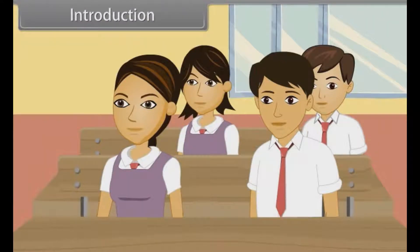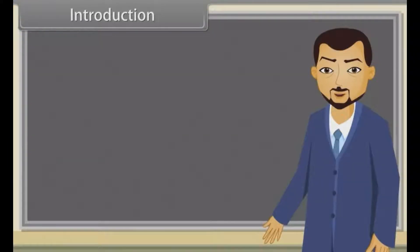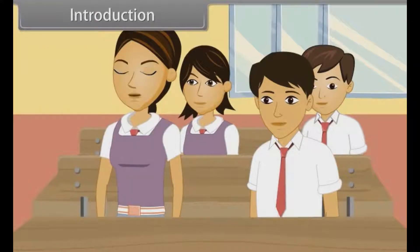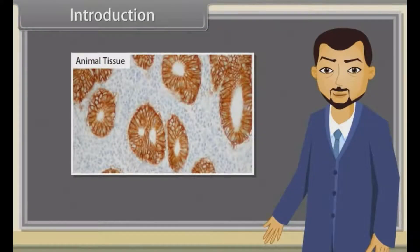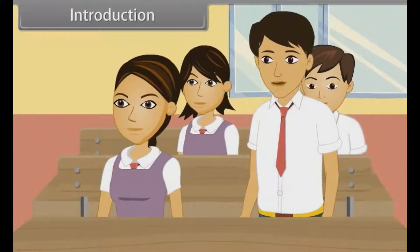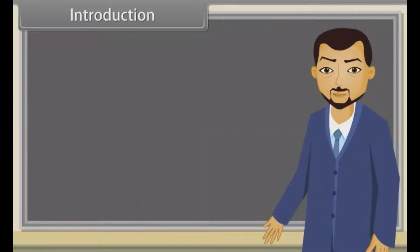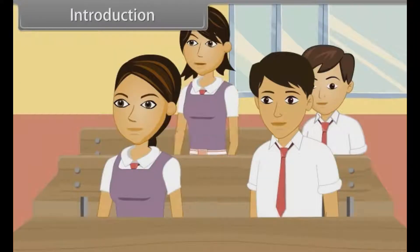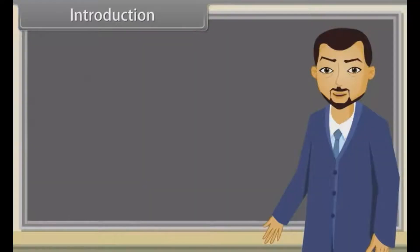Good morning teacher. Good morning students. Today we will learn structural organization in animals. Sir, what kind of structure do animals have? All the animals are made up of tissues. Sir, how many kinds of tissues in animals are present? There are four types of animal tissues. Sir, are the organs in human body also made of tissues? Yes, Naina. In this lesson, you will learn animal tissues and the organs.